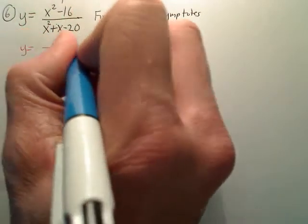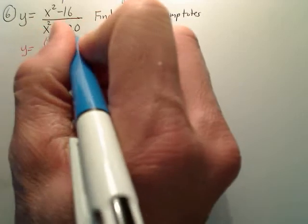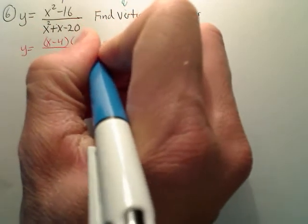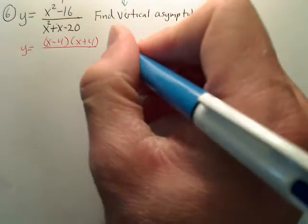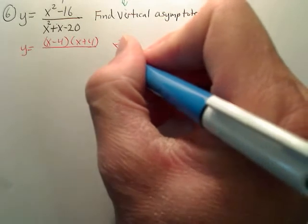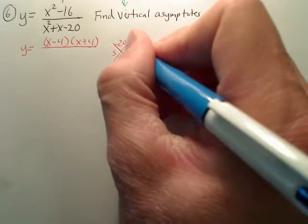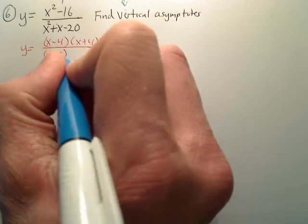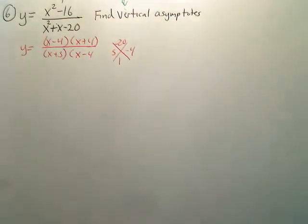When you factor the top, you get (x - 4)(x + 4). And on the bottom, negative 20 and 1 will be 5 and negative 4, so (x + 5)(x - 4).